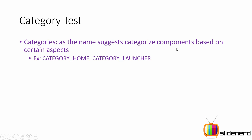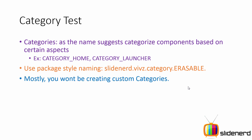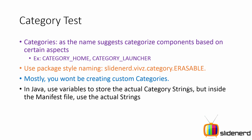Now let's take a look at the category test. Categories are basically used to categorize components. For example, if your activity defines category_HOME it simply means you want your activity to start as soon as the device first boots up — it's like the home activity. When you define category_LAUNCHER it means you want your activity's icon to appear in the launcher screen of all applications installed on the device. Package-style naming is used if you want to make your own categories, something like slnerd.webs.category.erasable, though mostly you won't need custom categories.